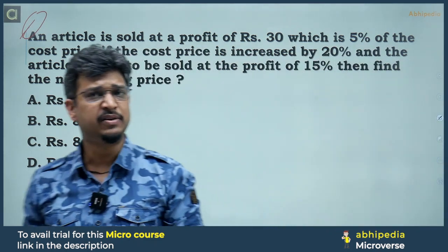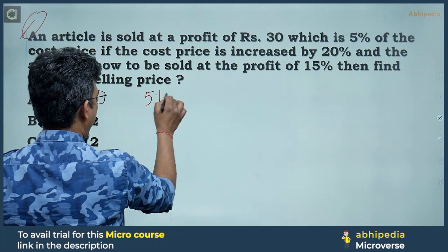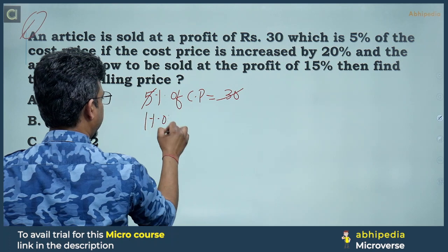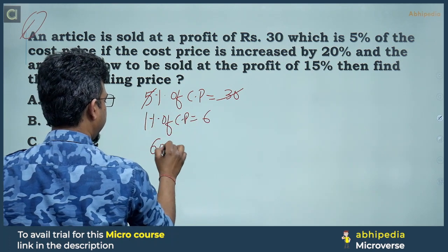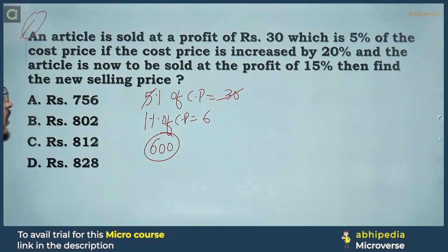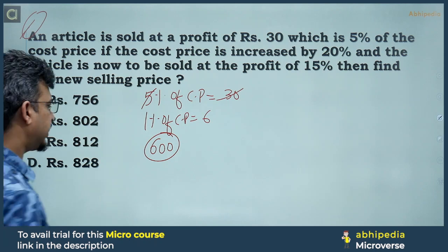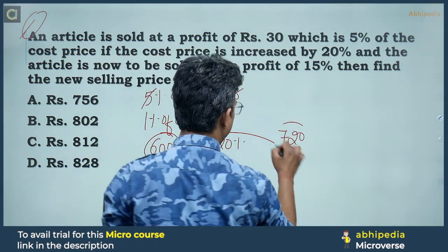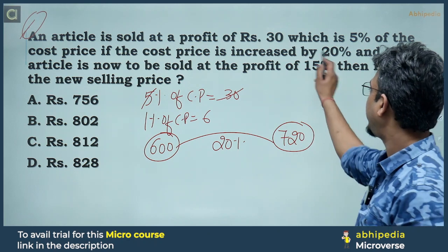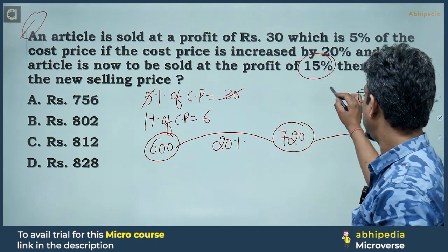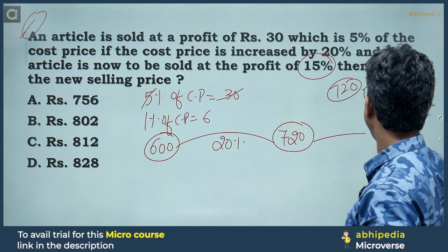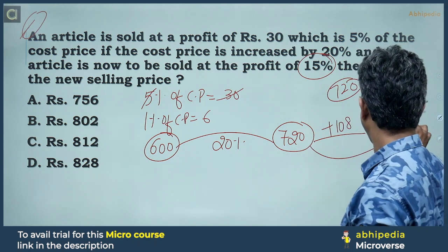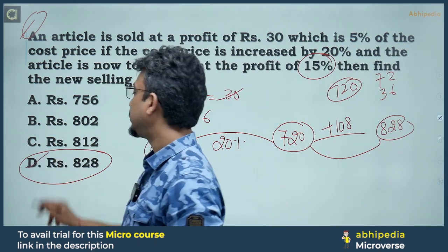Now from here, we find the cost price. 31% of cost price — what does that come to? We take 20% of this, 20% of this, and 20% of this, add them together. That's what was asked — the answer is option D.